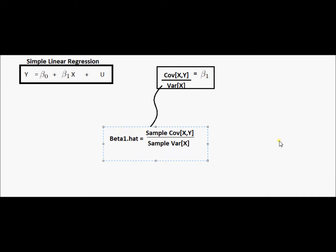This beta hat idea approximates this beta one idea, but it approximates it using all of the knowledge that we could possibly have in our sample.